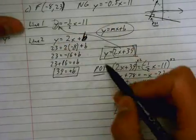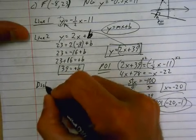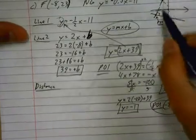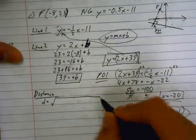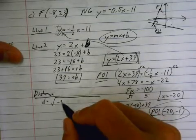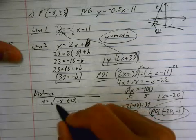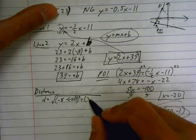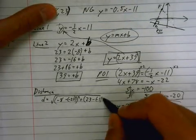Okay, now, after line 1 and line 2 and POI, I finally can solve for my distance between the POI and that original point. So, I'm finding this distance here. So, d is equal to the square root of negative 8 minus minus 20. So, x minus x squared plus y minus y squared. All right, so, 23 minus minus 1 squared.